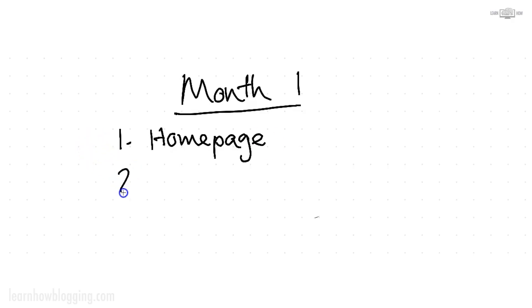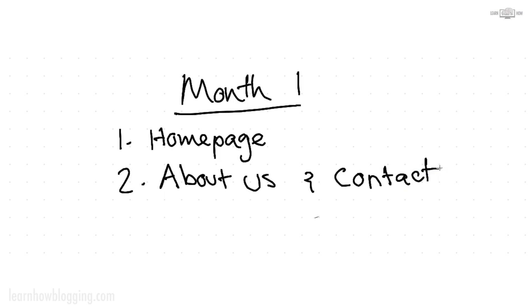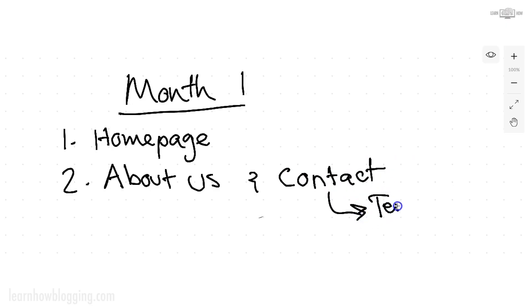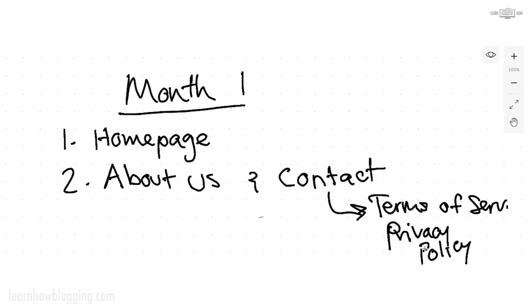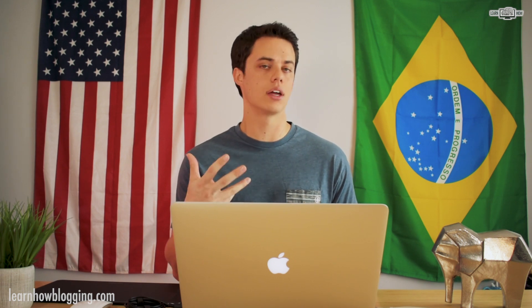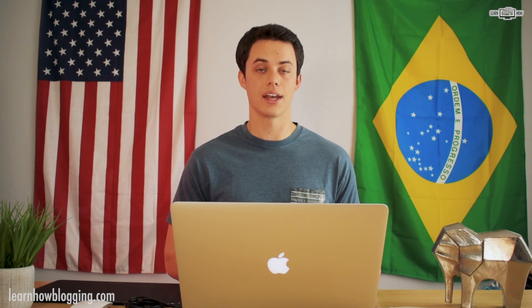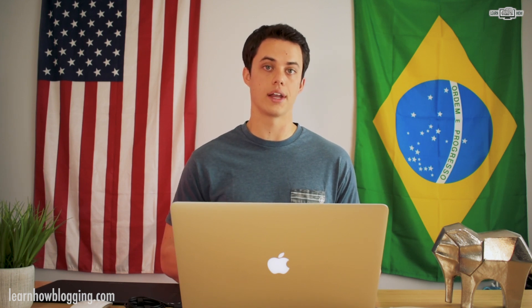Next, you're going to want to build your About Us and Contact pages. Whether or not people actually visit those pages early on, this is very important in Google's eyes. Google really likes to see an About Us page and a Contact page. I would also throw in a Terms of Service and a privacy policy, especially with the new GDPR regulations, which require you to have a privacy policy if you collect personal information on your blog.